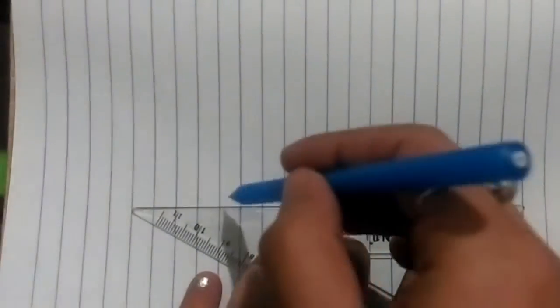In order to make an angle of 66 degrees, we will first draw a line, any line segment of any length. We shall name it as A and B.